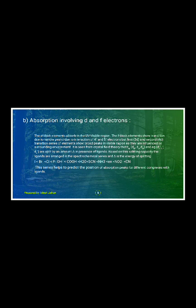Absorption involving D and F block elements. The D block elements absorb in the ultraviolet visible region. The F block elements show transitions due to narrow peaks due to the interaction of 4f and 5f electrons. The first 3d and second 4d transition series of elements show broad peaks in the visible region as they are influenced by the surrounding environment.